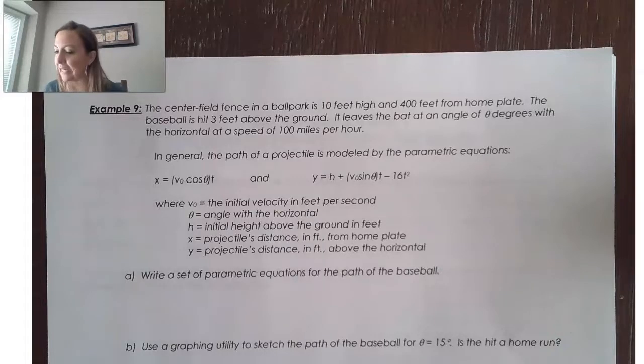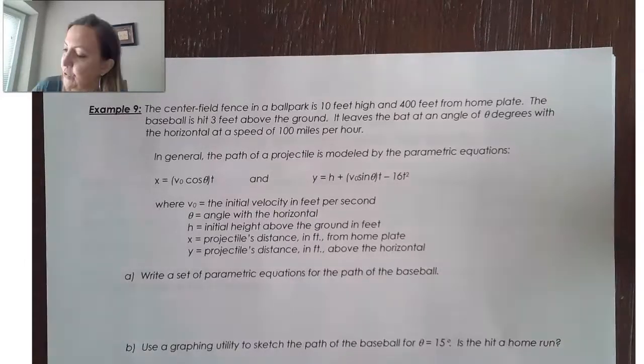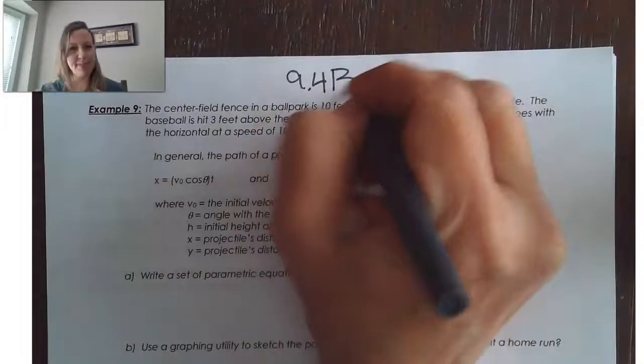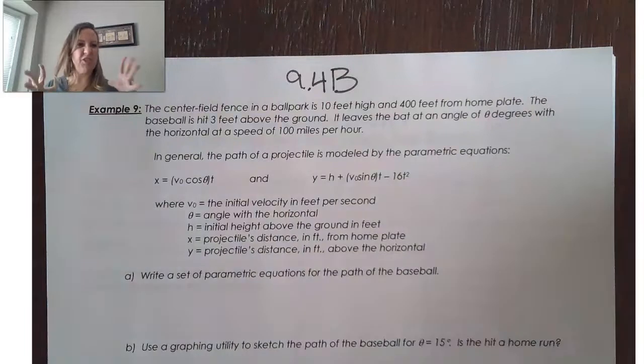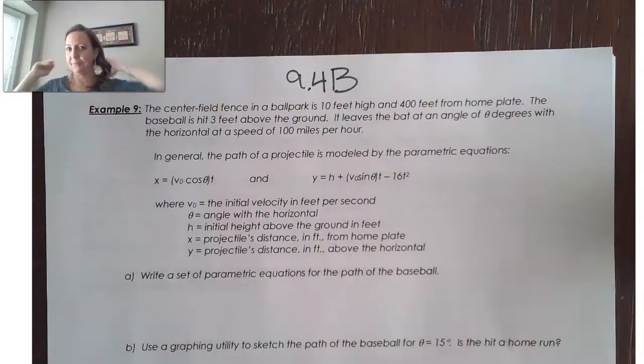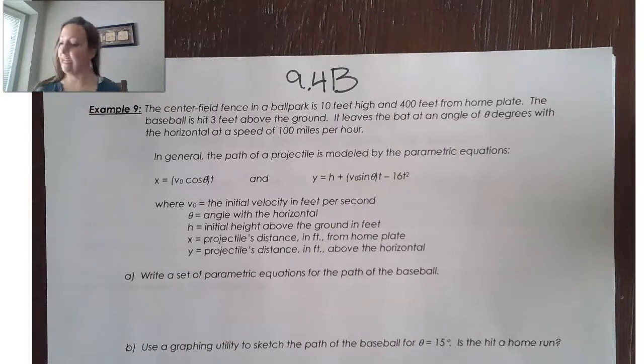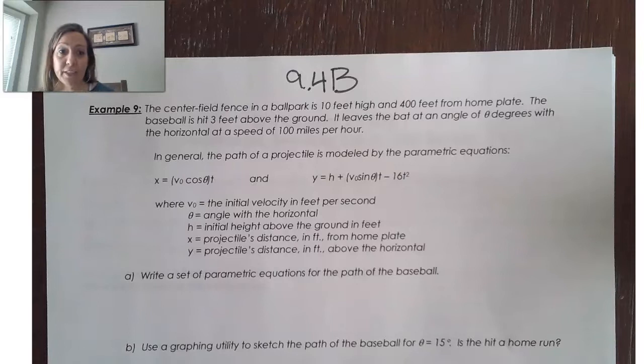Okay, so here's our lab continuation of what we were doing from 9-4-B, but this is an application problem. I thought that it would kind of deserve its own little video here. So, we have 100 feet from home plate. The baseball is hit with the horizontal at a speed of 100 miles per hour.